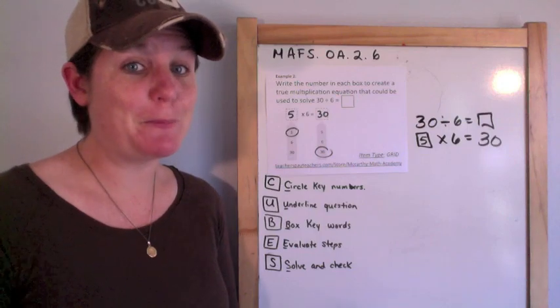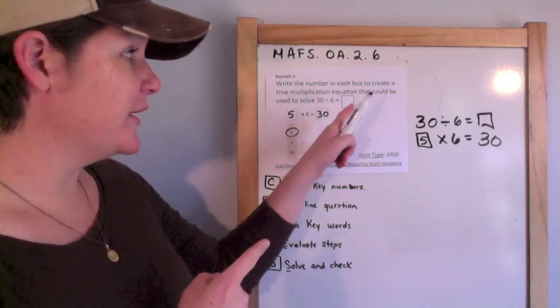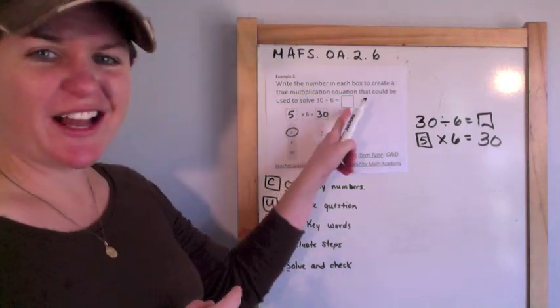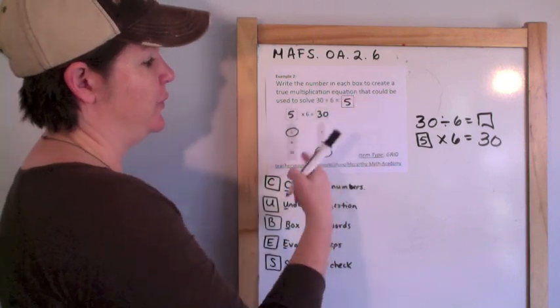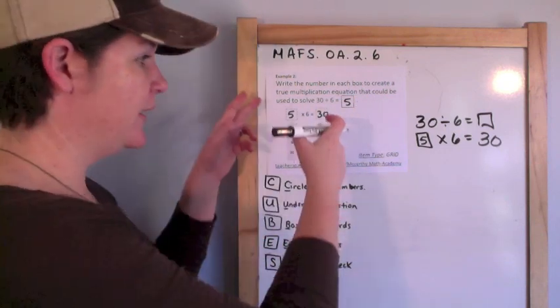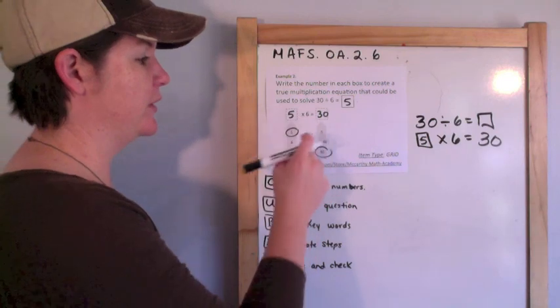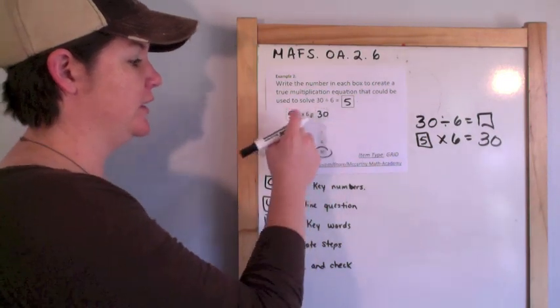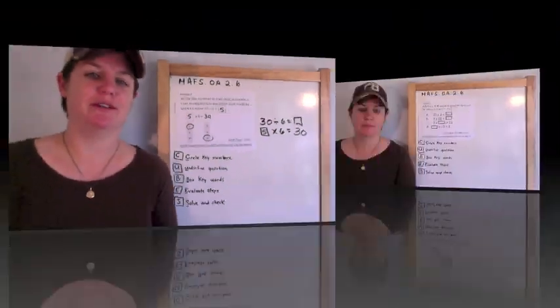That would be the same thing as: what times 6 equals 30? And obviously 5 times 6 equals 30, so 5 should go in this box, and 30 needs to go in this box. Multiplication and division are inverse operations, also known as fact families. Notice I could have put 5 in this box, but with the graphic item it was just asking me to write a number in here, and then I'm pretty sure you would have to circle it.